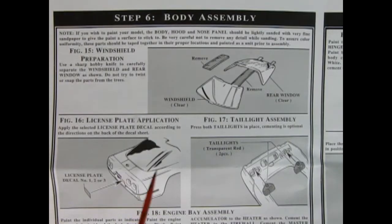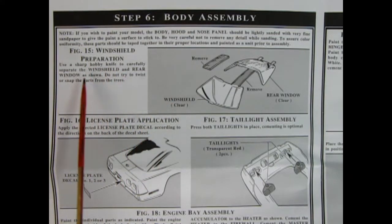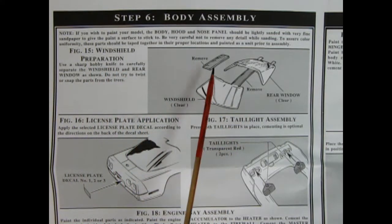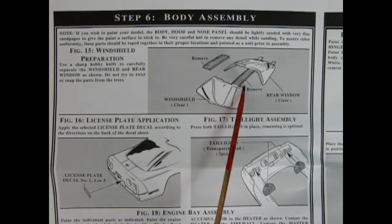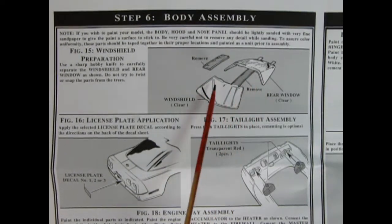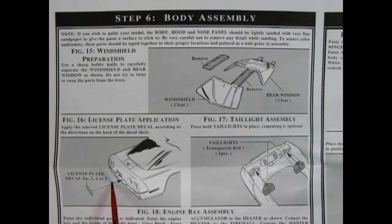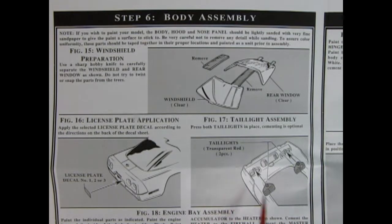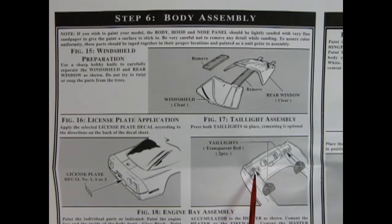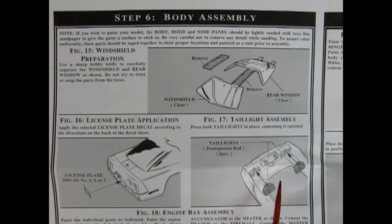Now in step six we begin our body assembly, and here we can see that we need to prepare our windshield and rear window by removing these little straps in between the two and cleaning up on the edges. Here we've got a license plate decal which drops into place in the back, and then if we flip our body upside down we can put in our rear brake lights. Now this is kind of odd that they do that, so remember to paint your body first before putting on the license plate.